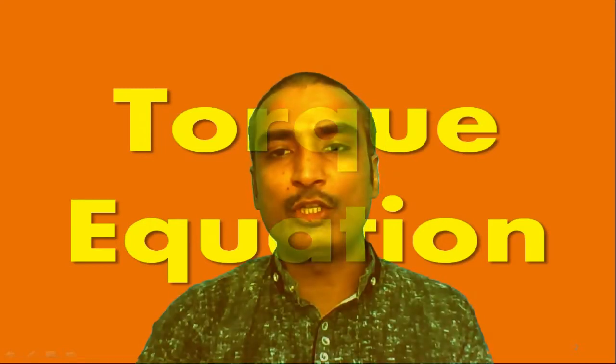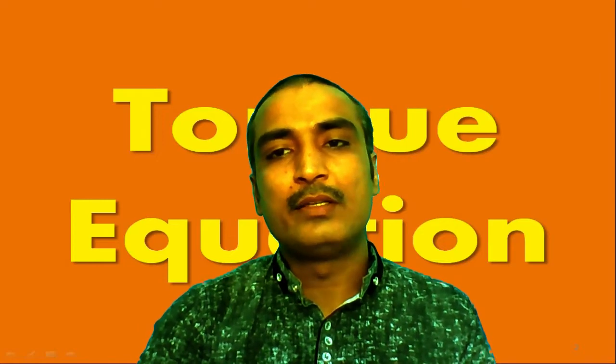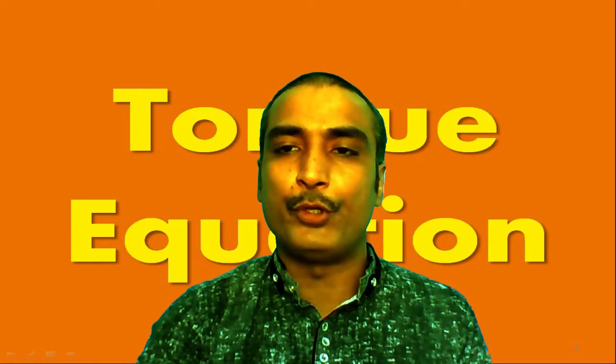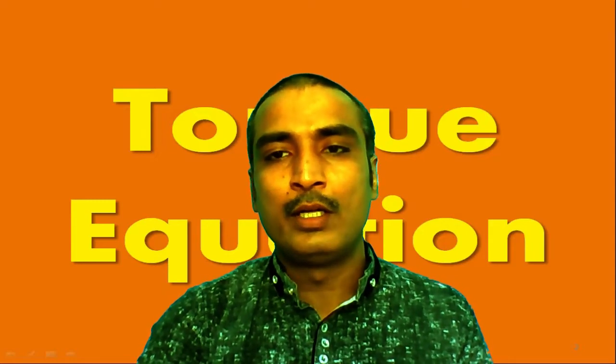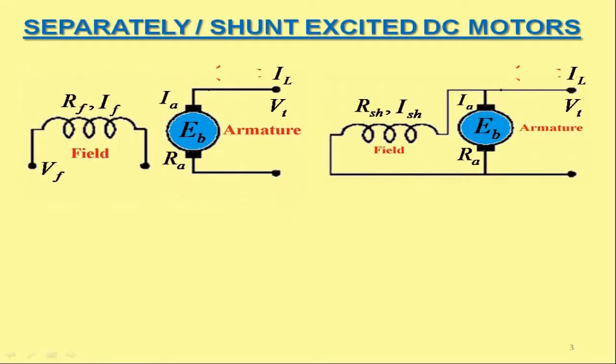In this lecture, we will deduce the expression for the torque produced. However, before deducing the expression for torque, let us first consider the cases of separately excited and shunt excited DC motors. For both these motors, the voltage across the armature, represented as Va, is the same as the terminal voltage Vt.